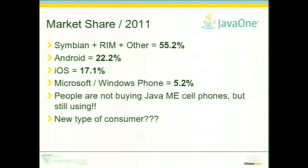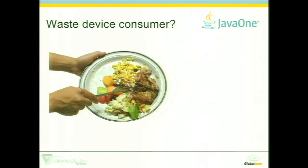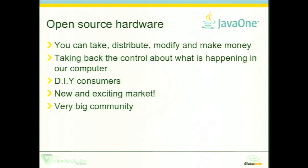People are not only not buying Java ME cell phones but still using them. Who here has a Java ME phone? Just the people from Brazil. And we have a new type of consumer — us. We did not throw away our mobile device. I carry my N95 with me. We want to take advantage of this to create new experiences, new software, and some kind of new trends today. One of them is open source hardware.